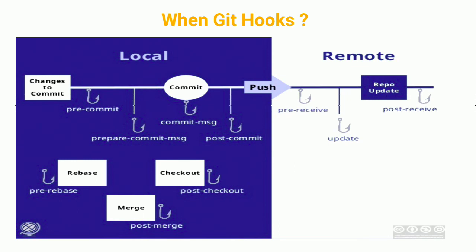Prepare-commit-msg just allows you to alter the basic template of the commit message. In the commit-msg hook you can enforce restrictions — for example, you can enforce the user to add a Jira ticket ID in the commit message, which most commits tend to skip.